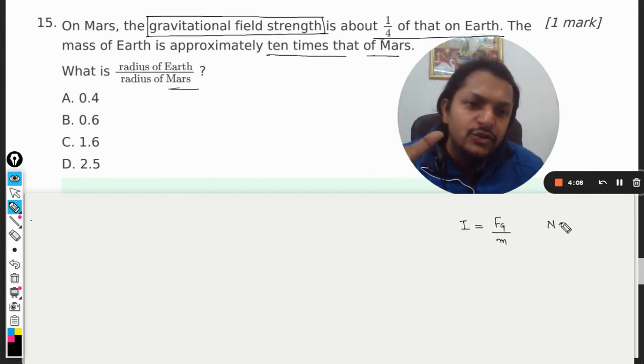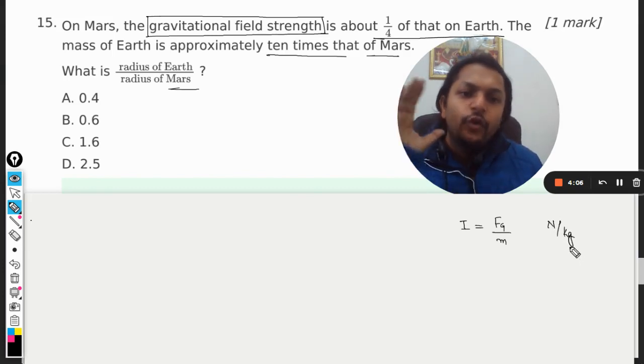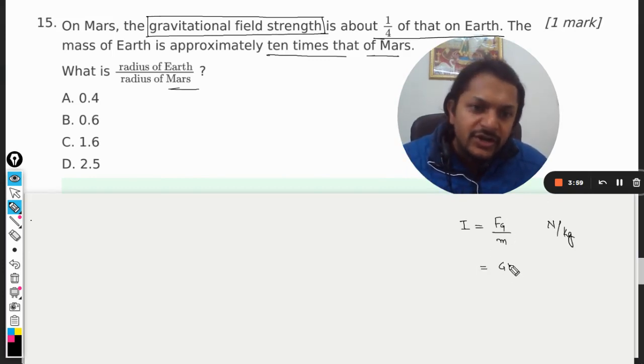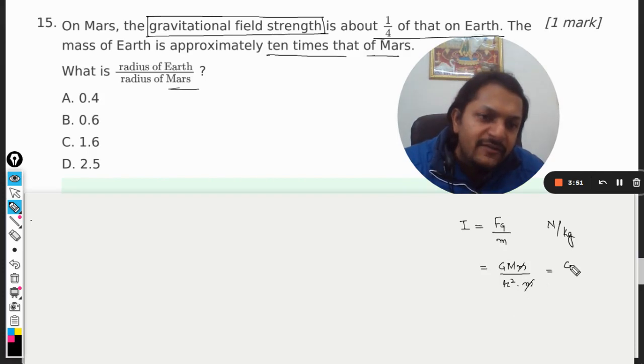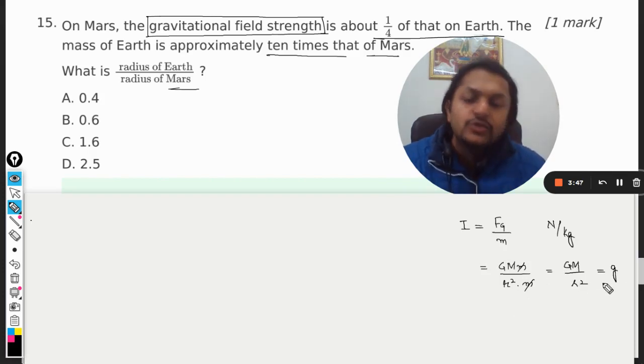The unit is Newton per kg, so it's like force experienced by a body per kg. But when you substitute this value here, like the gravitational force GMm/r² and m cancels out, so what you have is capital G M by r square, which is actually equal to g, the acceleration due to gravity.